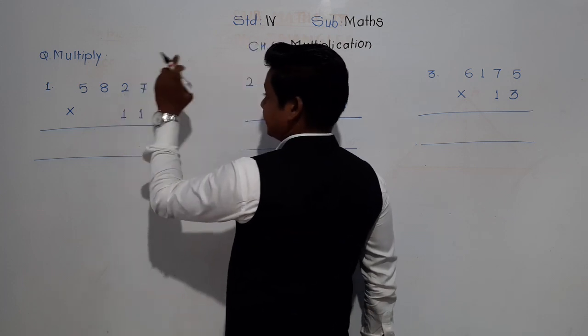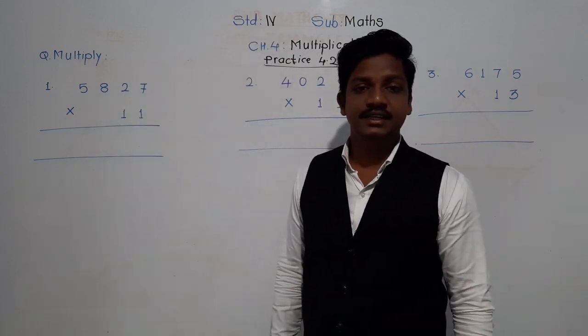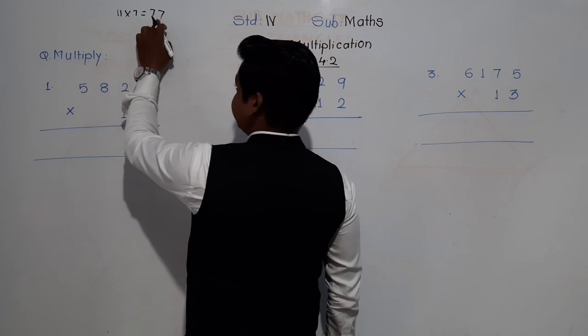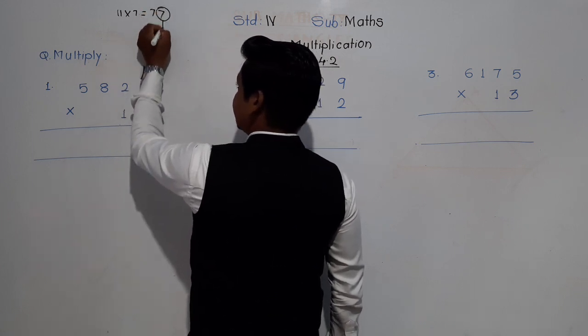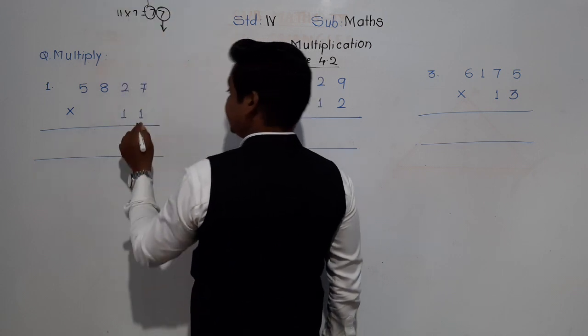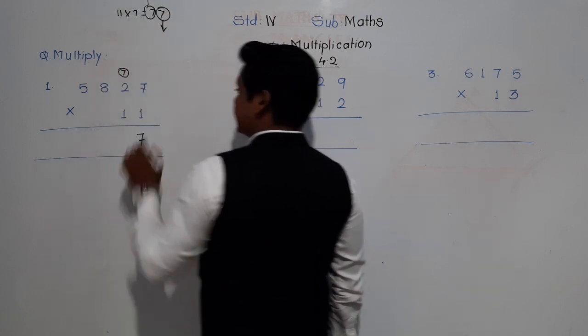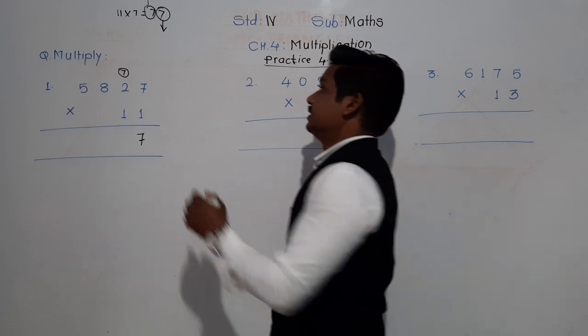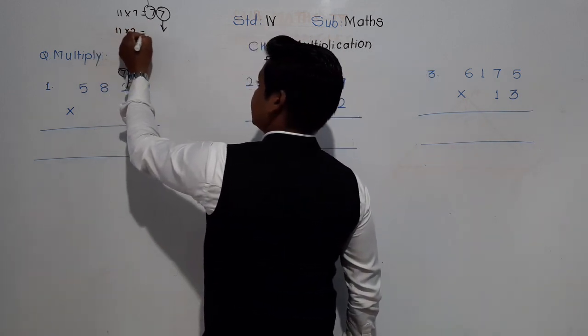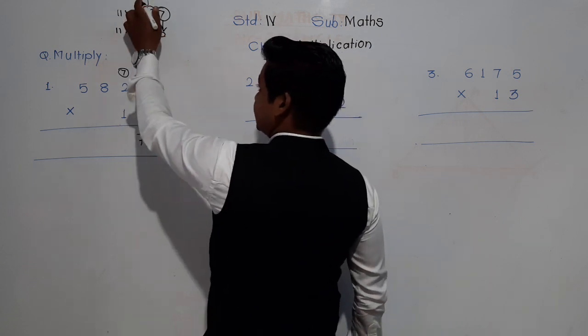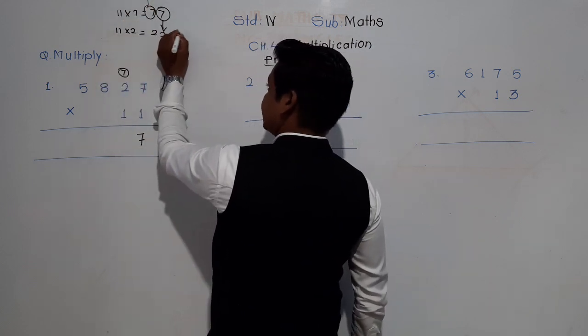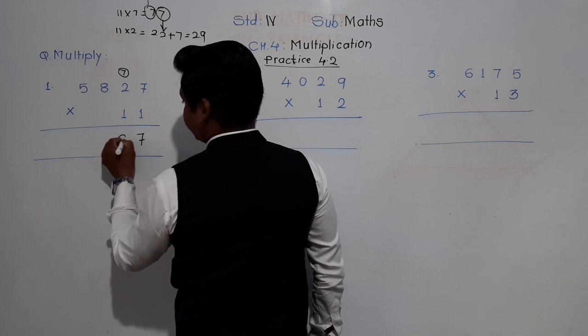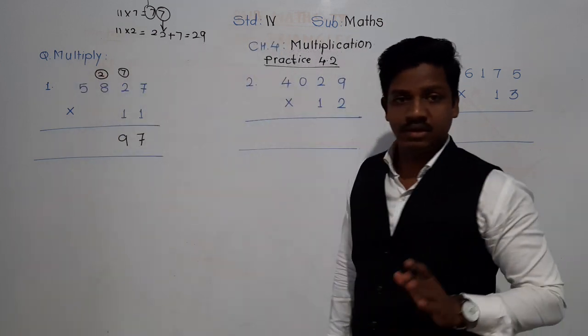11 sevens are 77, so this 7 will come down and this 7 will be carried to the tens place. Then 11 twos are 22, plus this carried 7. 22 plus 7 is 29, so 9 will come down and 2 will be carried.